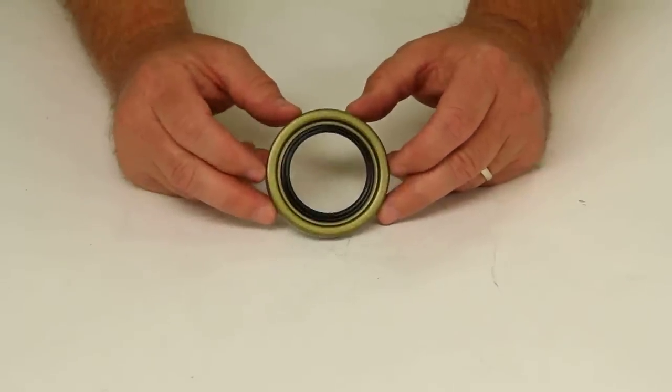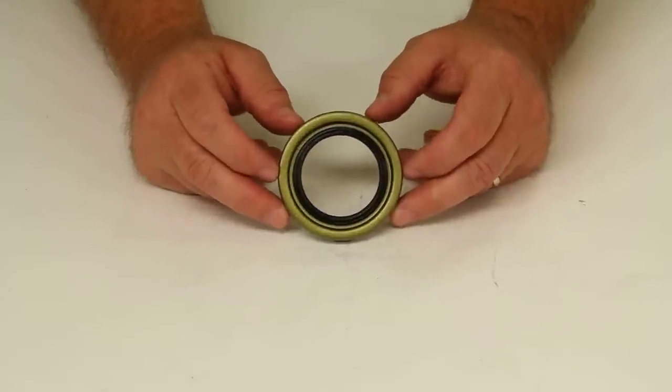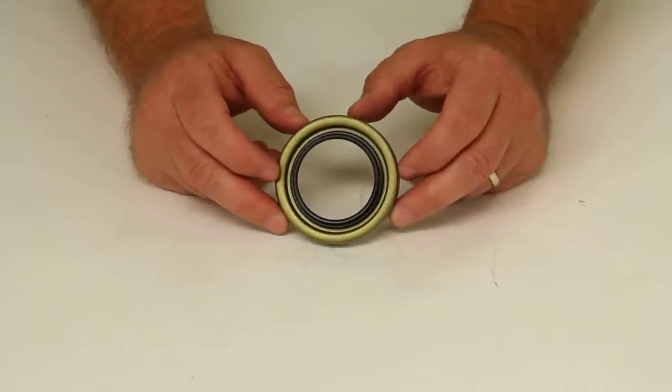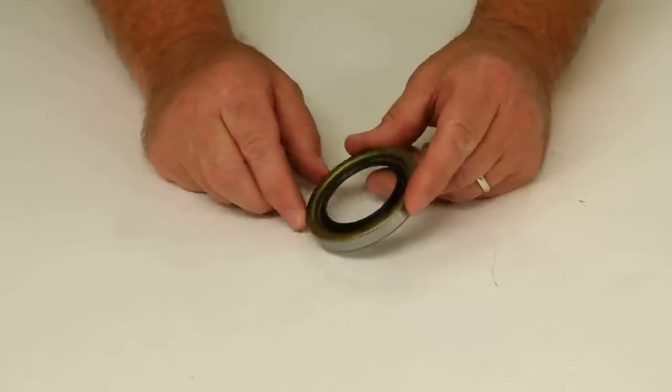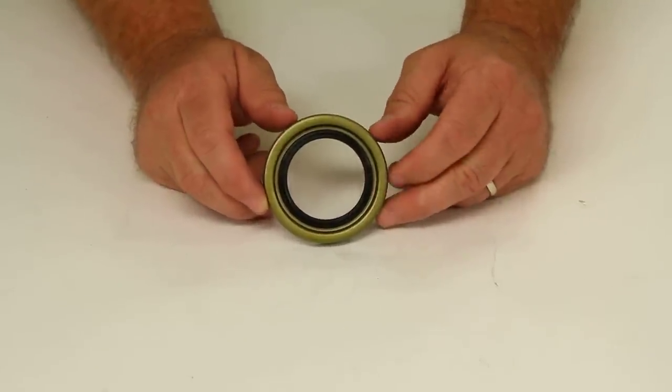Today we're going to review part number SL175. This is a Redline grease seal. This is a single lip seal design designed to be used on an agricultural hub.